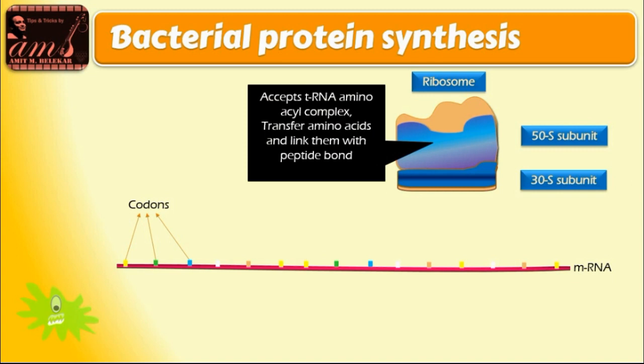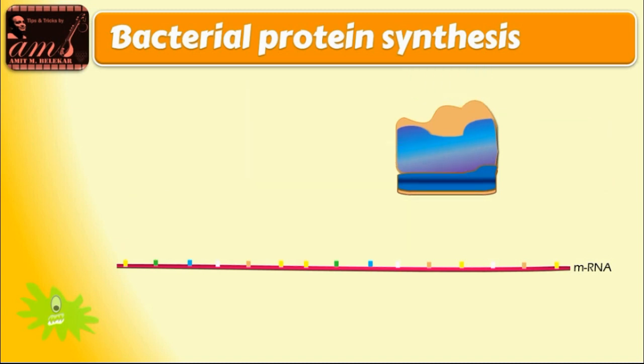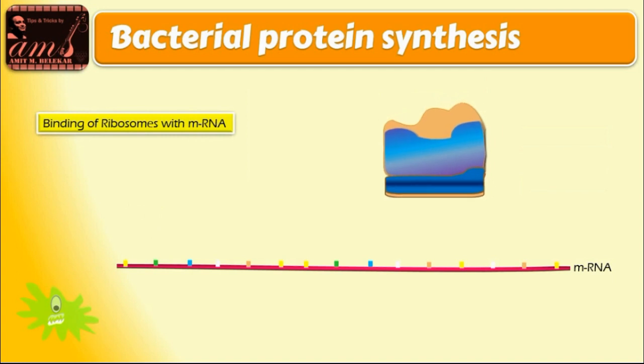Thus 50S subunit is responsible for accepting tRNA amino acid complex, transferring amino acid and linking them with the help of peptide bonds. Then ribosome binds with one end of mRNA.